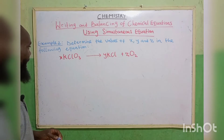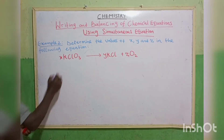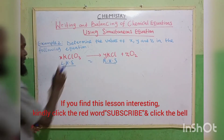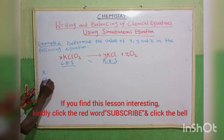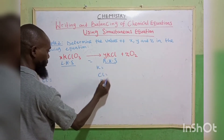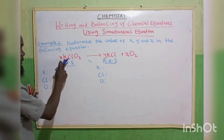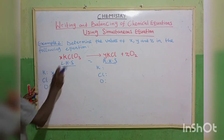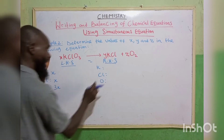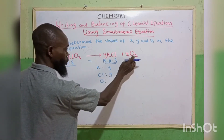Example 2. Determine the values of x, y, and z in the following equation as we did in the first. We have left hand side equals right hand side. The elements are potassium, chlorine, and oxygen on both sides. On the left: potassium is 1 times x giving x; chlorine is 1 times x giving x; oxygen is 3 times x giving 3x. On the right: potassium is y; chlorine is y; oxygen is 2 times z giving 2z.